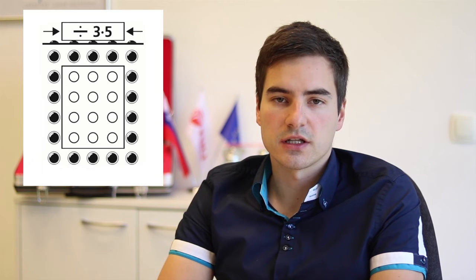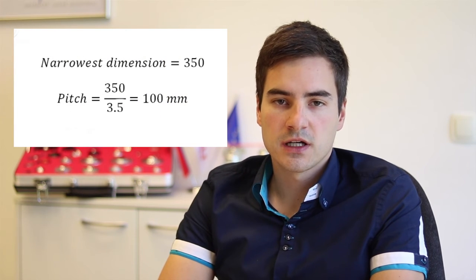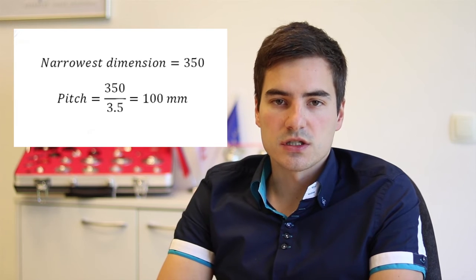Now that you have determined the required load capacity and shape of the ball units, it is time to calculate how many units you need for your ball table. First you need to know the pitch between ball units. The pitch is calculated by dividing the narrow dimension of the conveyed article by 3.5. For example, if the narrowest dimension of the conveyed article is 350 mm and you divide this by 3.5, the result is 100 mm, which is the maximum pitch between ball centers. This ensures that three ball units are always beneath the narrowest dimension of the load at any one time. A number of pitch patterns — square, diamond, and elongated — can be used subject to the footprint of the article to be moved.